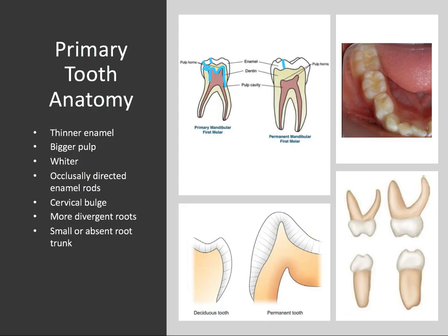Having thinner enamel also means the tooth appears more white. Note the pearly white tint of the primary teeth as opposed to the more yellowish tone of a permanent molar, and that's due to increased translucency with a thicker enamel layer.